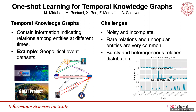Most real-world knowledge graphs suffer from incompleteness, and most existing KG completion methods rely on a sufficiently large number of training examples per relation. However, most real-world knowledge graphs have a long-tail structure, meaning that many relations occur only a handful of times.